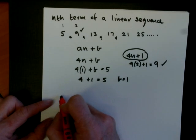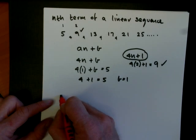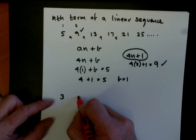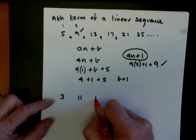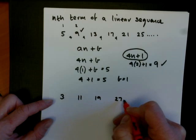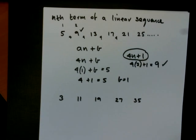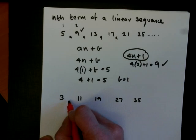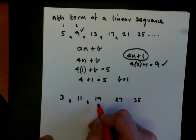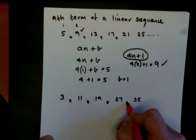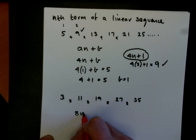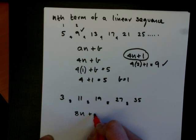So now let's look at another sequence. Let's look at 3, 11, 19, 27, 35. So if I look at the sequence, the first difference is 8, the next difference is 8, and so on. So I know then I'm looking at 8n plus b.